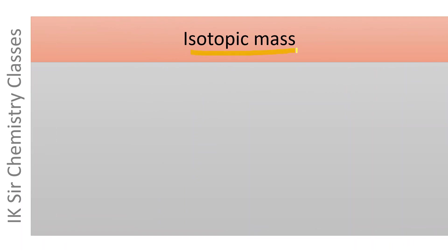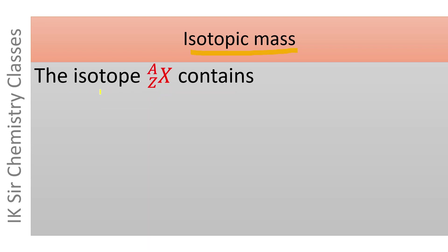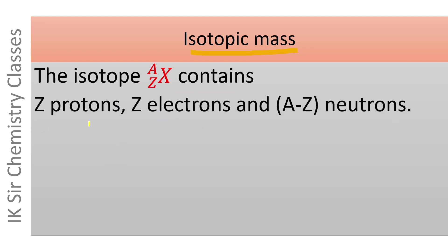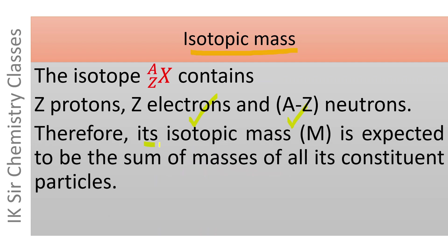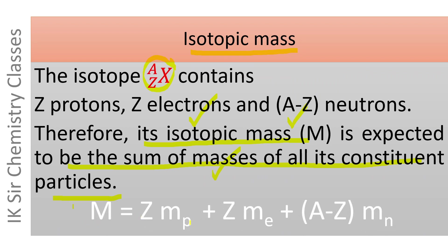Now, isotopic mass: the isotope ᴬ_Z X contains Z protons, Z electrons, and (A − Z) neutrons. Therefore its isotopic mass M is expected to be the sum of masses of all its constituent particles. That is, M = Z·mₚ + Z·mₑ + (A − Z)·mₙ. The terms involved in this equation are given on the next slide.